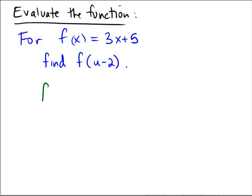What is f of u minus 2? Well, the f function is 3 times something plus 5, and the thing that we're replacing for the object, the variable, is an expression u minus 2. So the answer is actually simply 3 times u minus 2 plus 5.